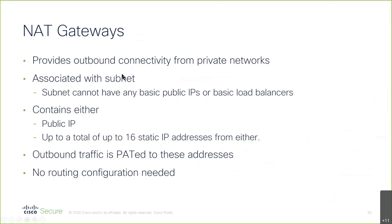NAT gateways are basically like a NAT firewall for outbound traffic. You don't really need them because public IPs assigned to VMs will automatically be NATed properly by Azure. But this is something extra you could do to get a little fancy by having pools of IP addresses — up to 16 IP addresses.